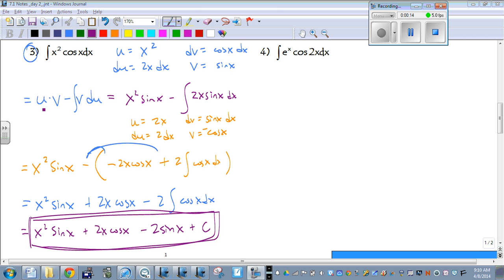So we have u times v minus antiderivative of v du, which gives us x squared times sine of x minus the antiderivative of 2x sine of x dx. So we're in the same situation here, we can't evaluate this with u substitution or just normally, so what we're going to do is use integration by parts again.